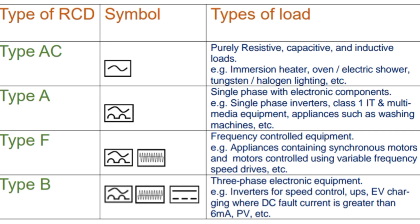The first type we are talking about is the type AC. Anytime you pick an RCD or an RCBO and you see this symbol on it, this simply tells you that this is a type AC RCD or RCBO. This type of RCD is used where the fault current is expected to be sinusoidal and at the same frequency as the supply. Examples of loads where a type AC RCD will be useful are immersion heaters, ovens, electric showers, and tungsten or halogen lighting. These systems must not come with electronic parts.